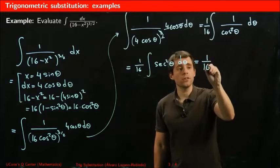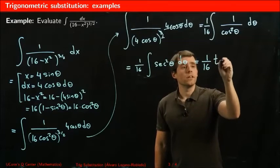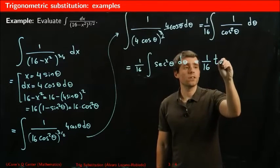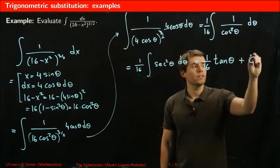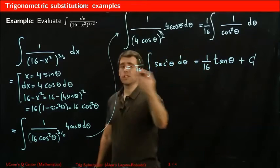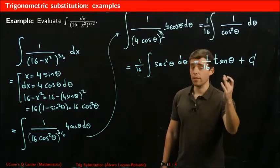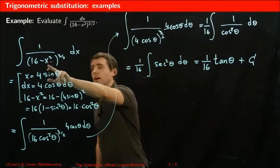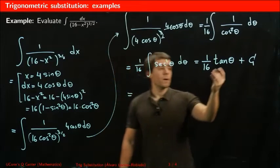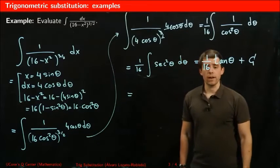This is just the integral equals 1/16 of tangent theta plus a constant. And we're done. We've been able to integrate this function. In terms of theta, though, the original integral was in terms of x. So we want to go back to expressing this as a function of x.